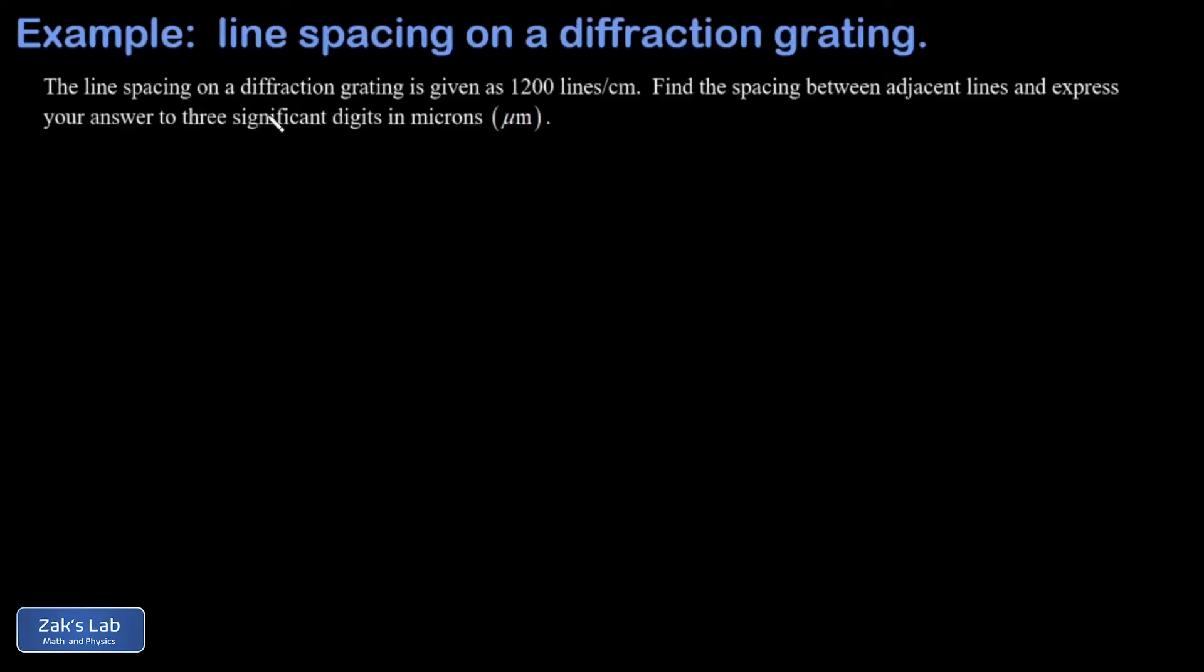In this problem, we're given the line spacing of a diffraction grating. So if you're curious, a diffraction grating is a device that's used to spread out different wavelengths of light.